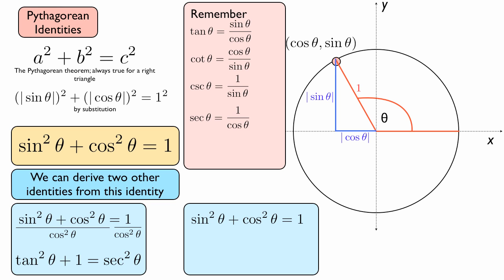And the other one is, again, we start from this one, but instead of dividing by cosine squared theta, we divide by sine squared theta on both sides. And we get 1 plus cotangent squared theta is equal to cosecant squared theta.